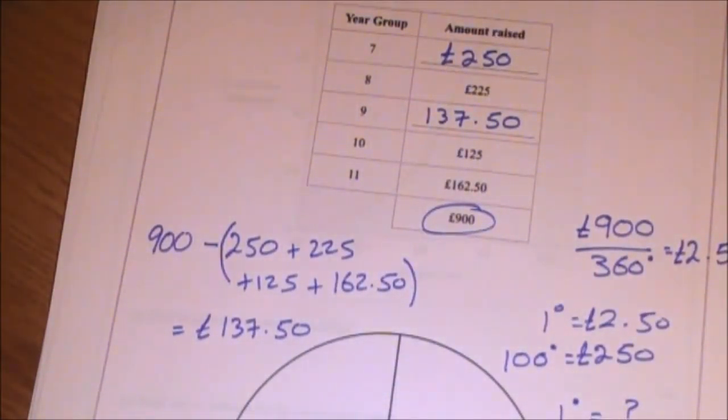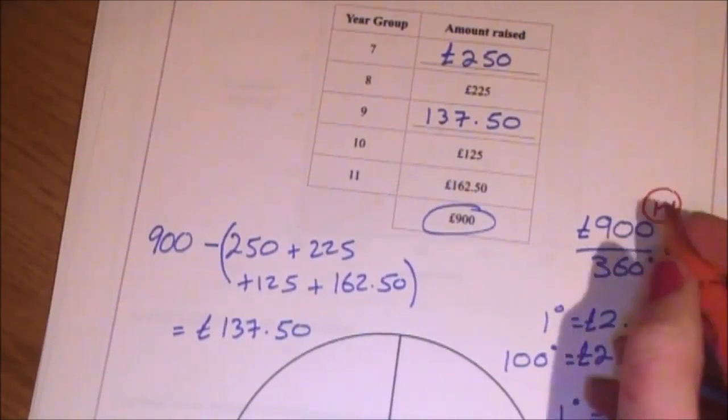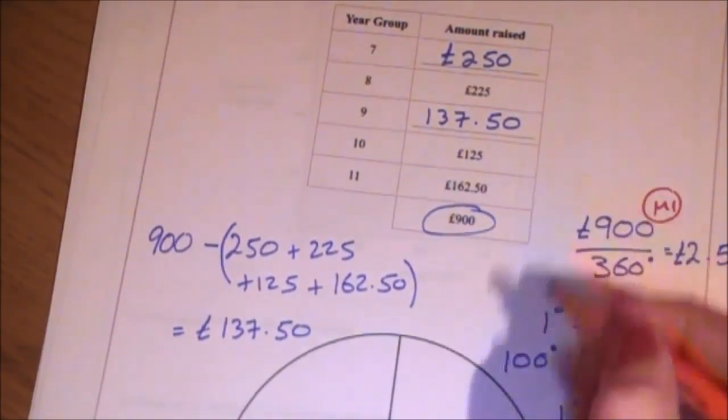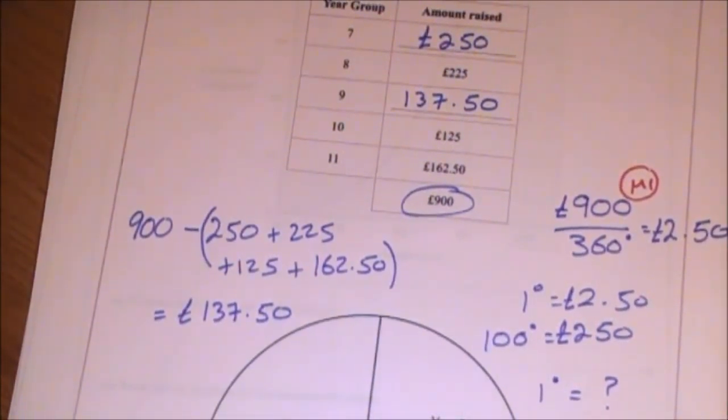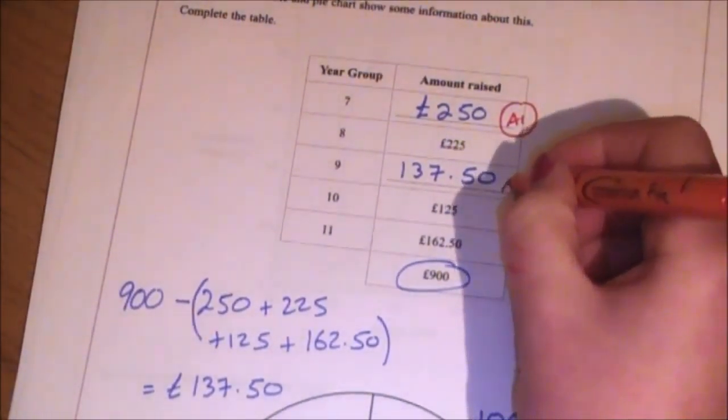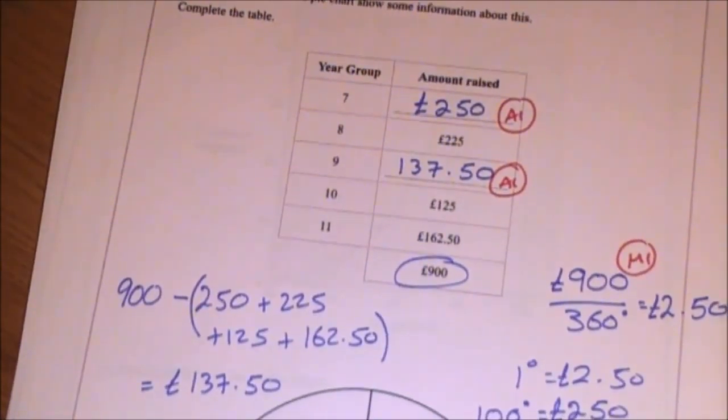That's your three marks. With regards to how these marks are divided, you get one mark here for showing the proportion with regards to the total and the pie chart. You get an answer mark for getting the year 7's right and an answer mark for getting the year 9's right. That's your three mark question.